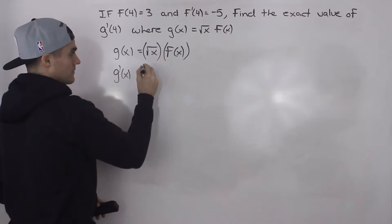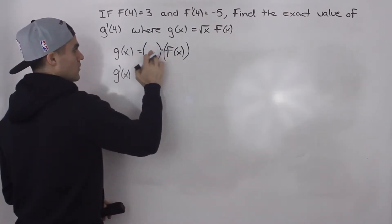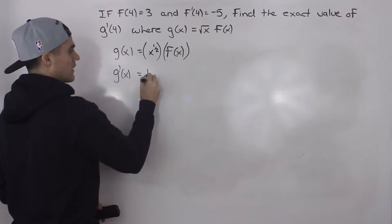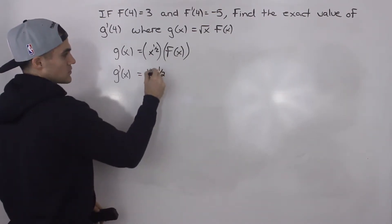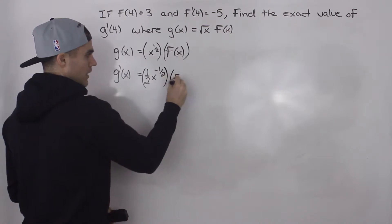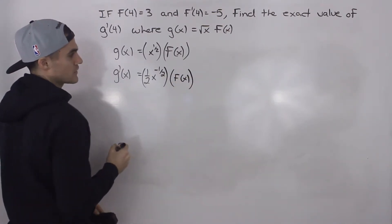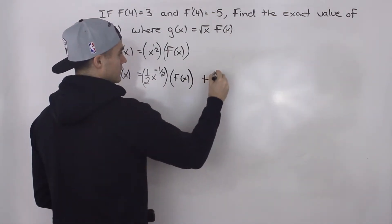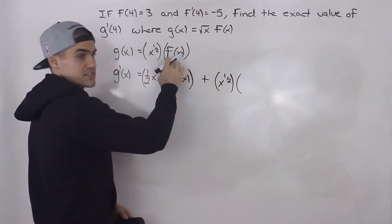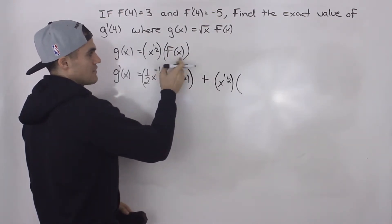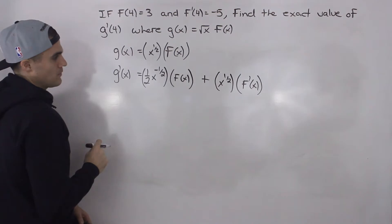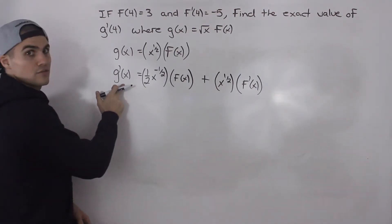So we take the derivative of the first function. Square root of x can be rewritten as x to the power of one half. Taking the derivative of that, we bring the half down and subtract one from the exponent — one half minus one is negative one half. We multiply it by the second function left as is, then add the first function left as is, x to the power of one half, multiplied by the derivative of the second function, f'(x).